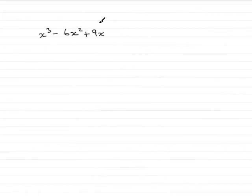Now in the first part of the question, we're asked to factorise x cubed minus 6x squared plus 9x. And how would I do this? Well,